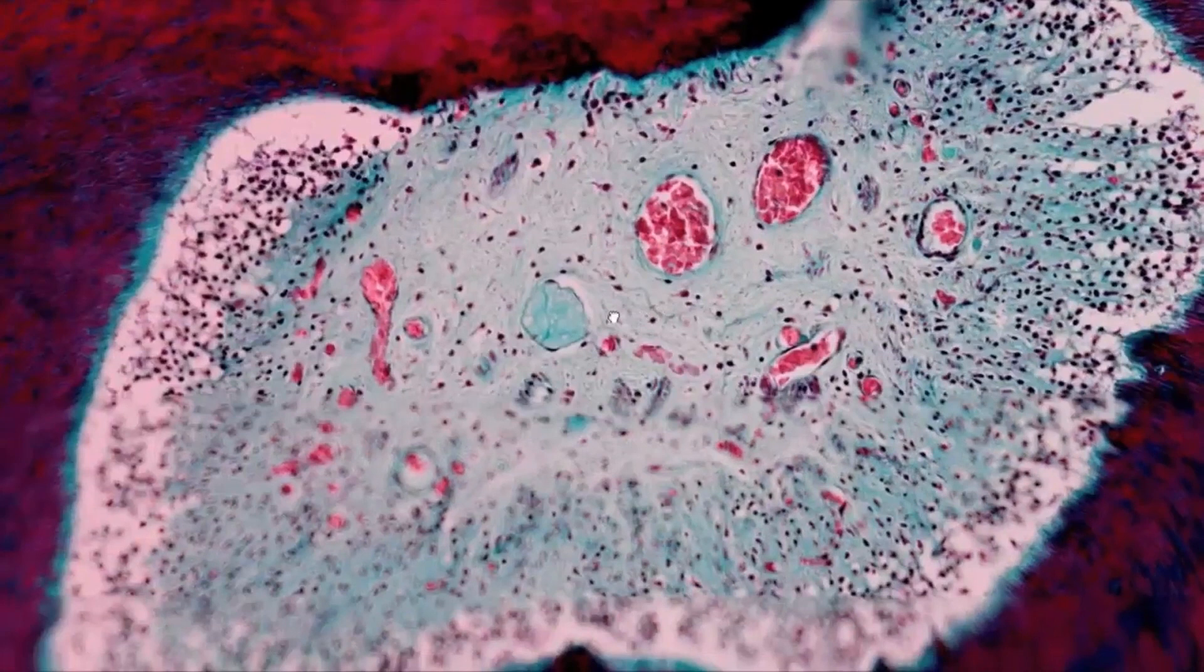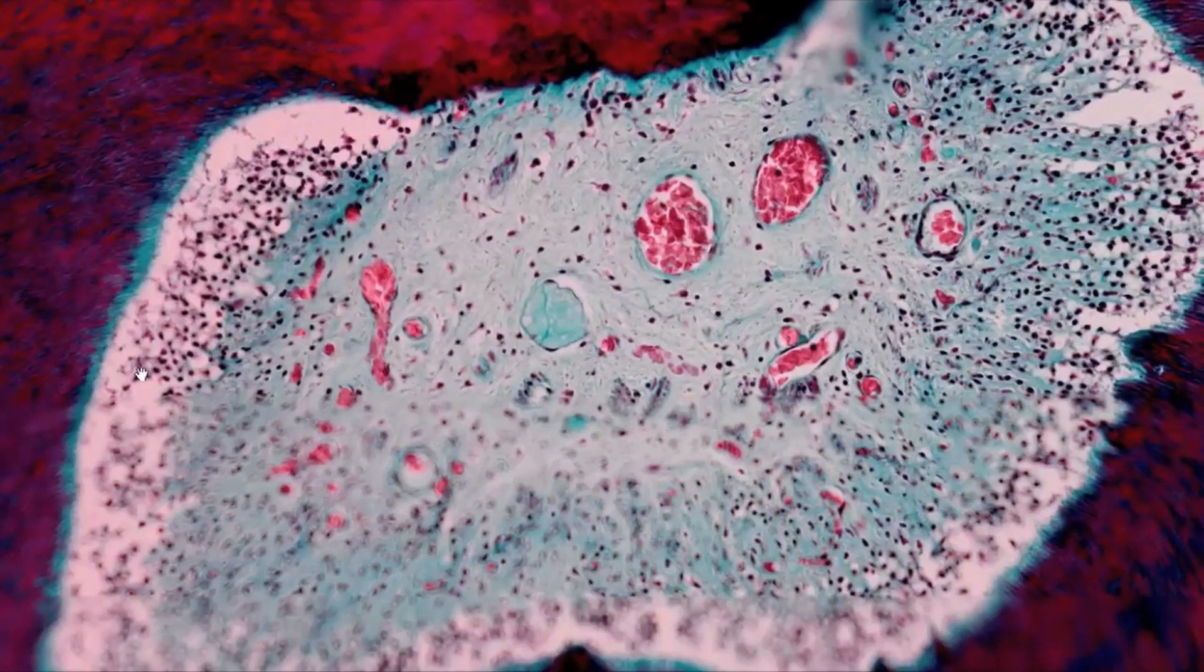The outer part of the tooth pulp is lined by odontoblasts, which are responsible for dentine formation. Columnar cells with distinct cell nuclei are arranged in palisades in the crown pulp. Cuboidal cells are found in the root.